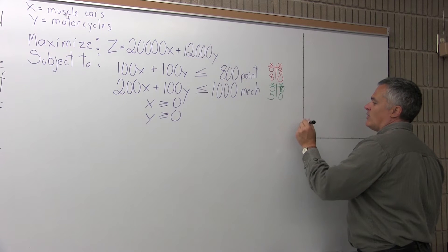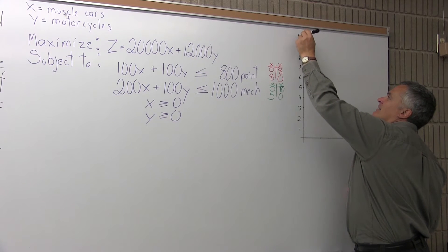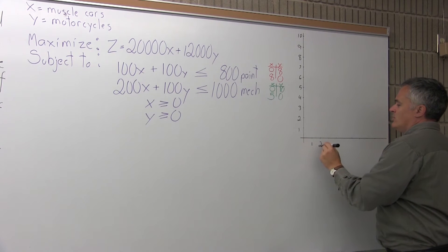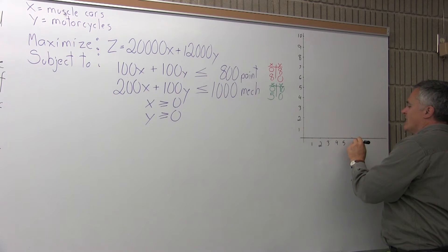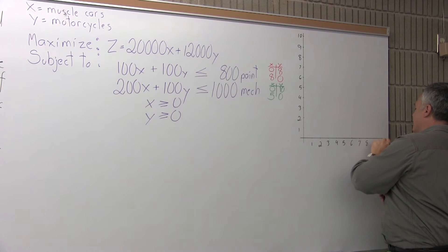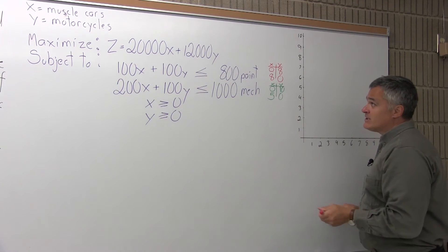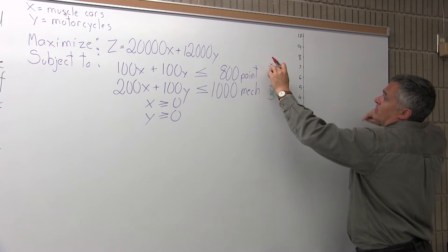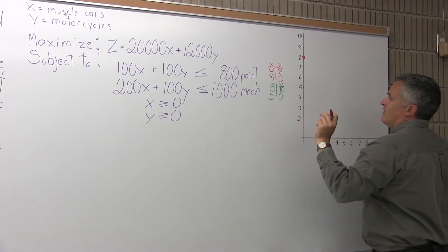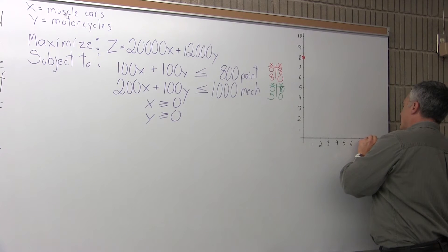For the Y scale I'll go 1 through 10, since I do have a Y value of 10. And the X's I'll run the same — up to 10 is easy enough. Now to actually draw the constraints. The paint constraint in red: I put the point (0, 8) on my graph — over 0, up 8 — then over 8, up 0 as a red dot. I connect those with a straight line.